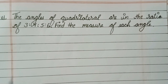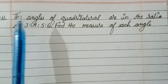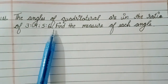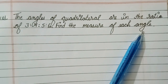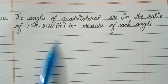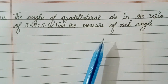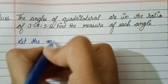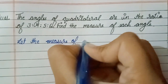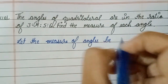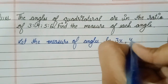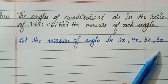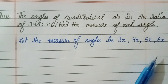Hi friends, welcome back to my channel. Today we will solve this question: the angles of a quadrilateral are in the ratio 3:4:5:6. Find the measure of each angle. The angles are given and we have to find the measure of each angle. So first, we will let the measure of angles be 3x, 4x, 5x, and 6x.